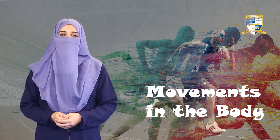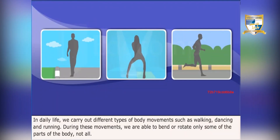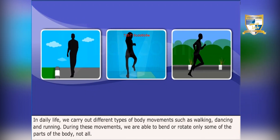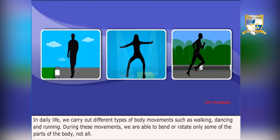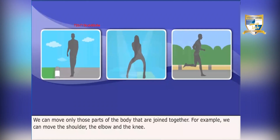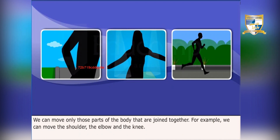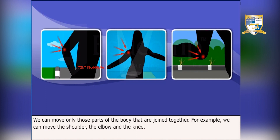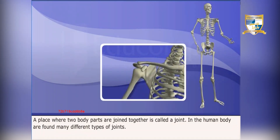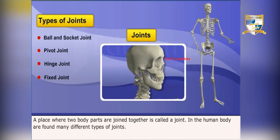In daily life we carry out different types of body movements such as walking, dancing, and running. During these movements we are able to bend or rotate only some parts of the body. A place where two body parts are joined together is called a joint, and in the human body there are many different types of joints.